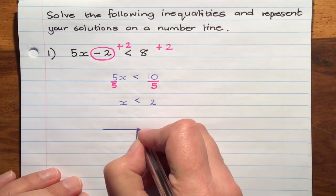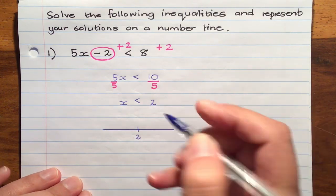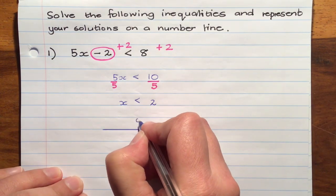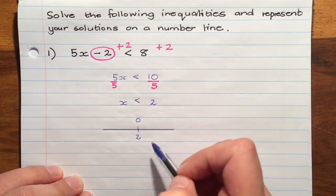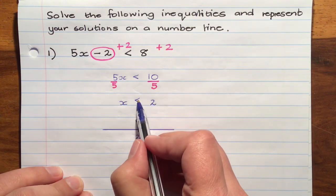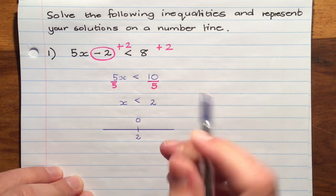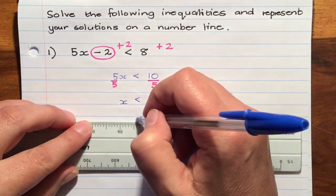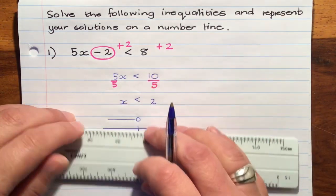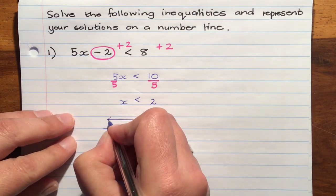is just to mark off 2, draw a circle above it. Does it include the 2? No, because it just says less than. So we're going to leave it as an open circle and draw our line extending to the left because it's everything which is less than 2.